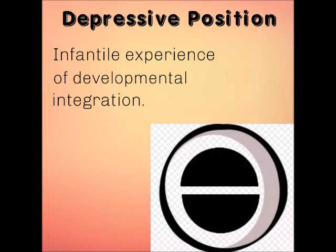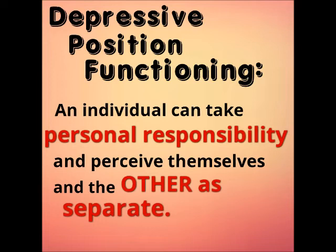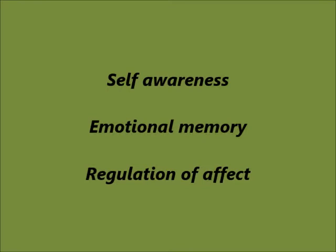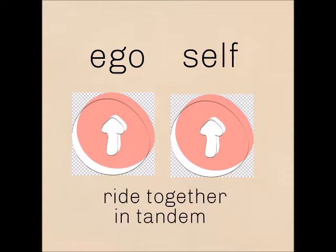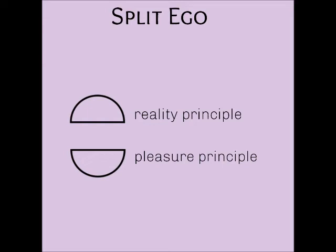But first, we have to understand the depressive position. This process is vital to integration, where the processes of projection and introjection cycle both good and bad aspects of an object into an integrated whole. Recall some important ego functions such as self-awareness, reality testing, memory with recollection of conflicting impulses and ideas, and regulation of affect. Also recall that the ego and the self ride in tandem, so if the ego is split — also known as pathological — the self is split, and vice versa.